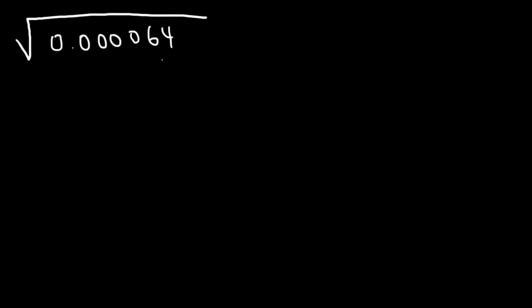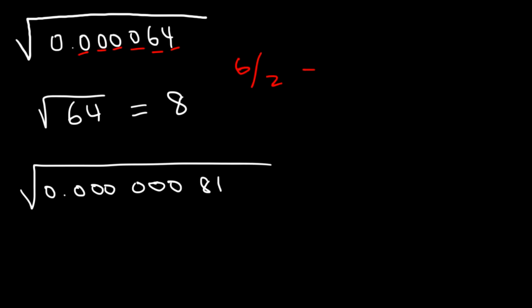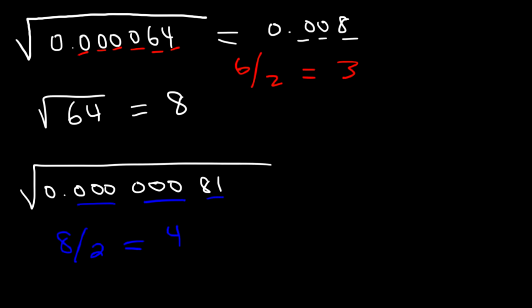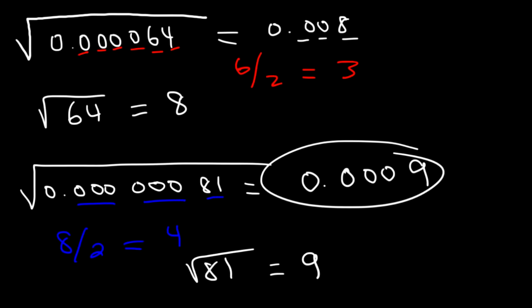Go ahead and try these two: the square root of 0.00064 and the square root of 0.000081. The square root of 64 is equal to 8. Here we have a total of 6 digits, and 6 divided by 2 is 3, so the answer has to contain 3 digits to the right of the decimal point — it's going to be 0.008. In the next number we have a total of 8 digits, and 8 divided by 2 means our answer should contain 4 digits. The square root of 81 is 9, so we need 3 zeros and then a 9, giving us 0.0009.